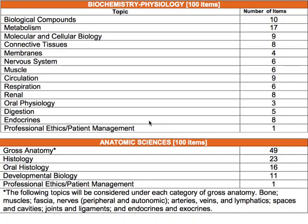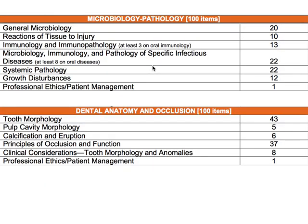Here's a breakdown of all four subject areas and the topics included. This is straight from the ADA website, their guide for the National Board Part One exam. It shows the estimated number of questions from each topic, so when you're studying you can focus on the topics that have more items associated with them. And here are the breakdowns for the other two subject areas.